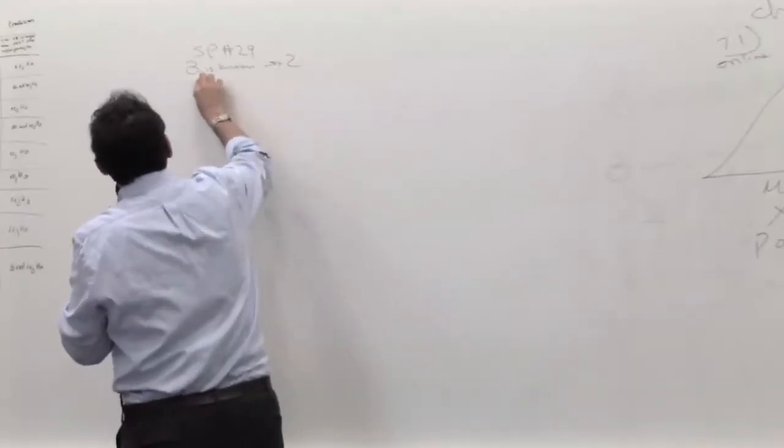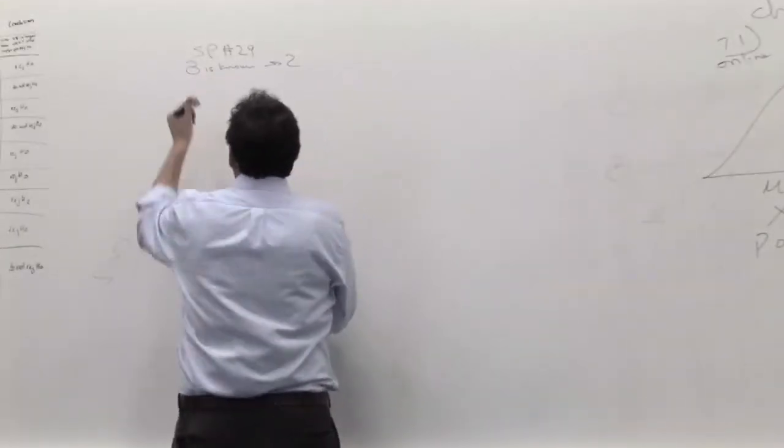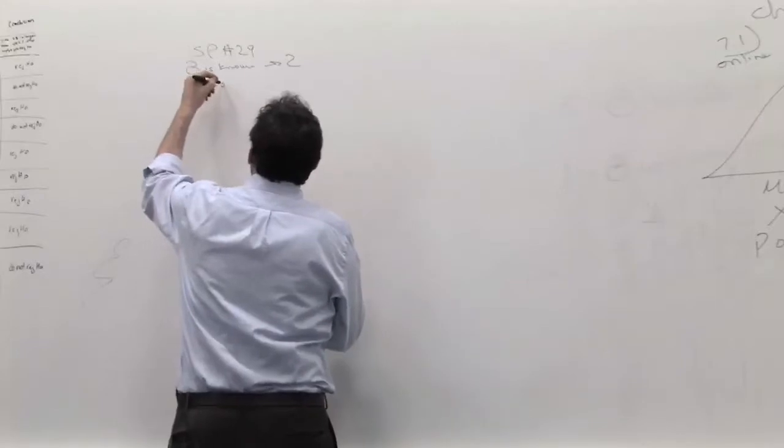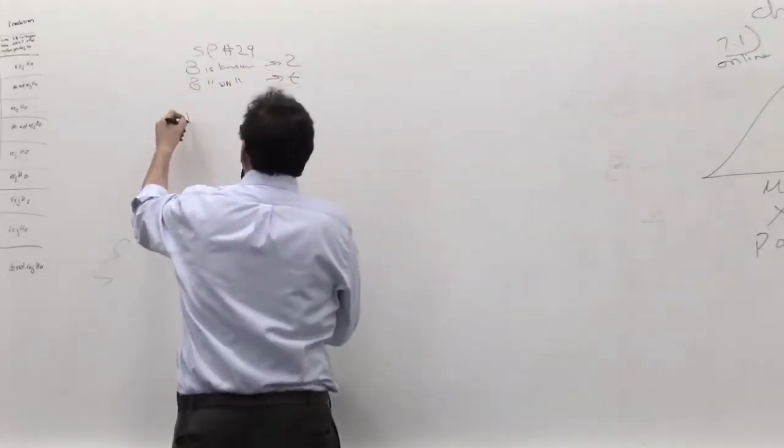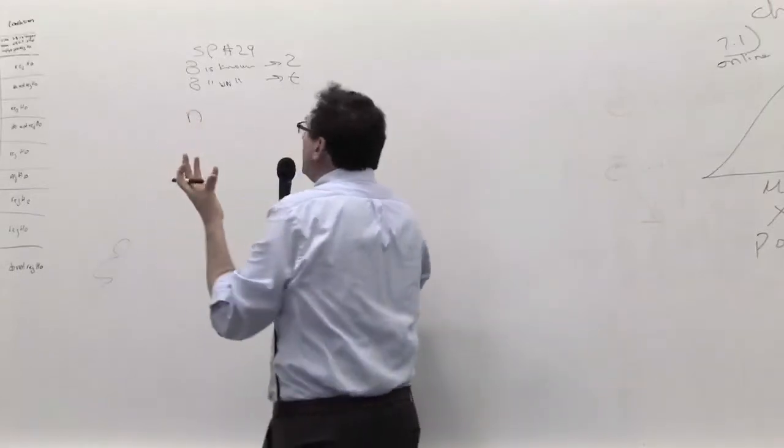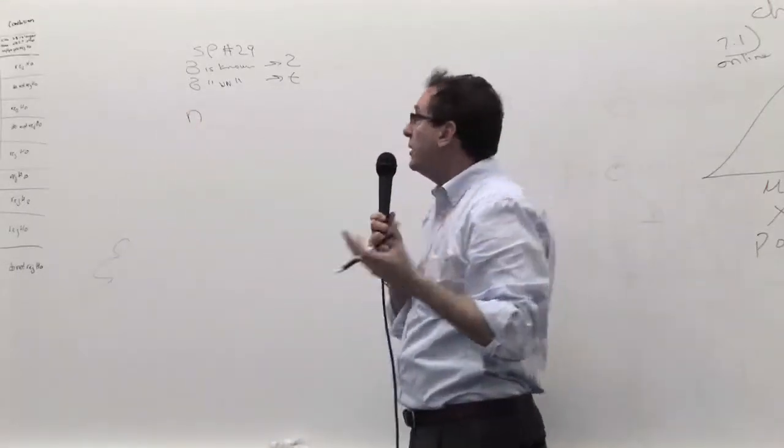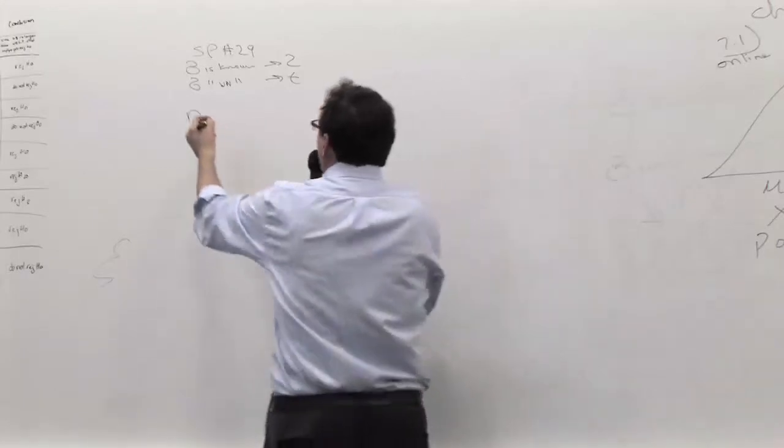But you would think that as the sample size gets larger and larger, the t, which represents how much uncertainty there is about the measure of the standard deviation, as the sample size gets larger and larger, you'd expect that as it gets larger...